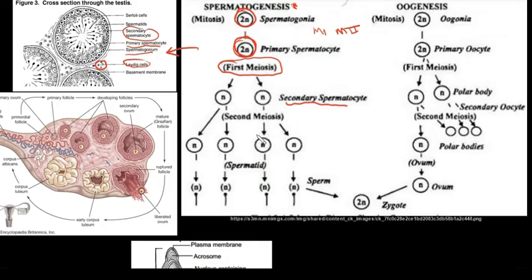During meiosis two, the secondary spermatocytes produce haploid spermatids. These spermatids then grow and develop and finally become the sperm cells that will be released.